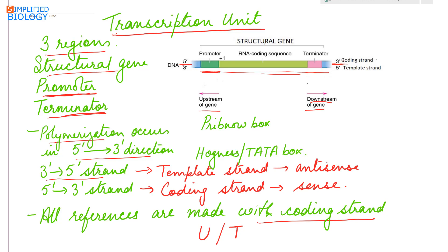Present in the promoter is the Pribnow box in prokaryotes, while in eukaryotes the Hogness or TATA box is found.